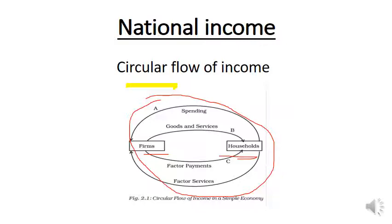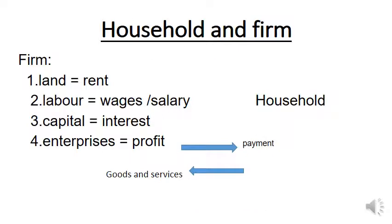Let's see. If you are talking about a household and a company, you can connect them. For the factors of production, if you run a company, there are four key inputs.